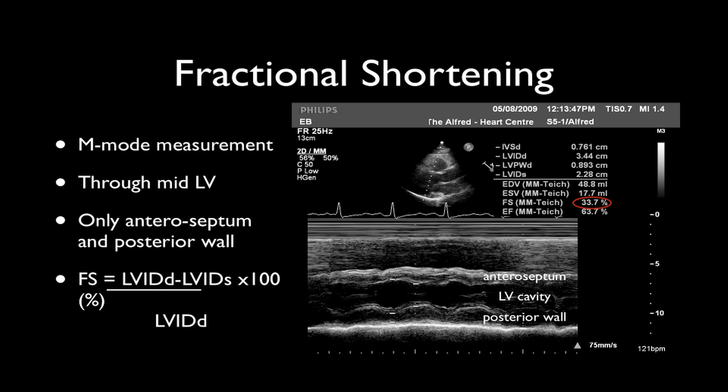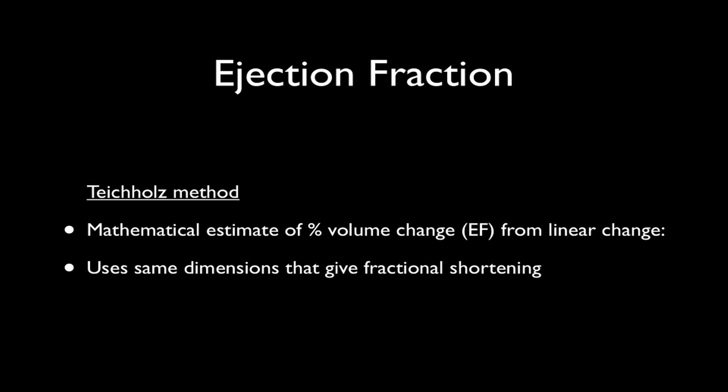The measurement is taken through the middle of the left ventricle — the line of sight is just at the tips of the mitral valve leaflets — and it only pertains to the anteroseptum and the posterior wall. The left ventricular cavity is measured in diastole, timed from the ECG, and at end-systole, maximal anterior excursion of the posterior wall is taken. The result is presented as a percentage.